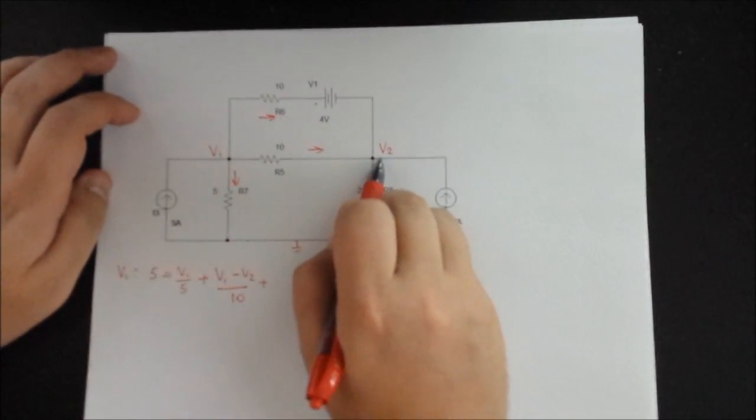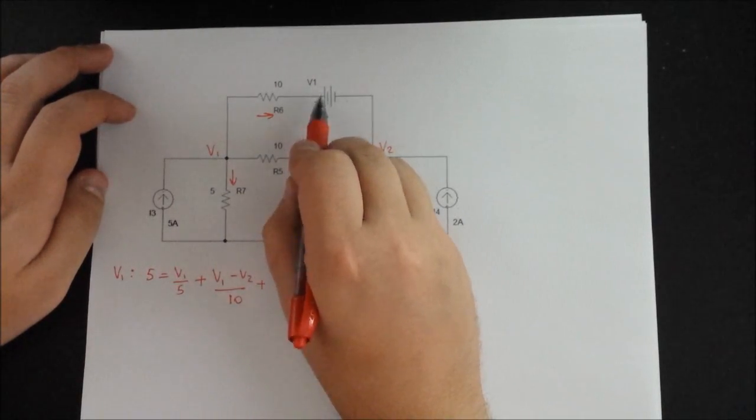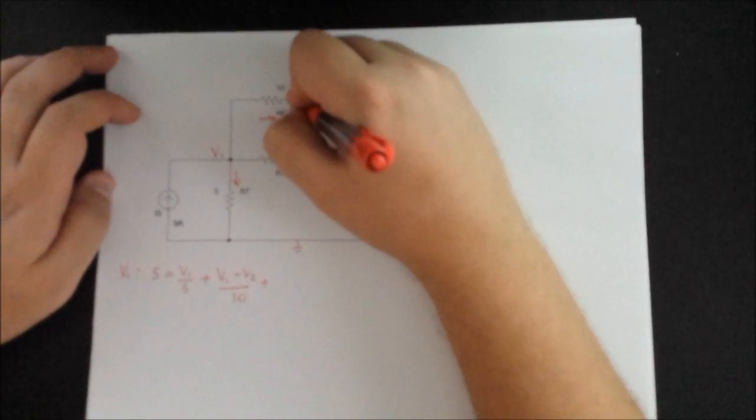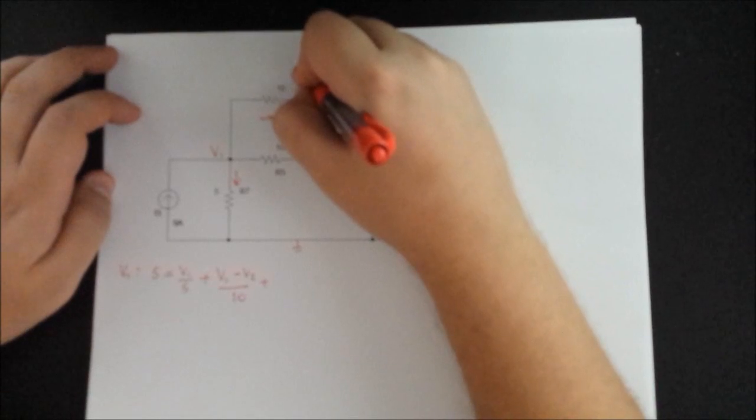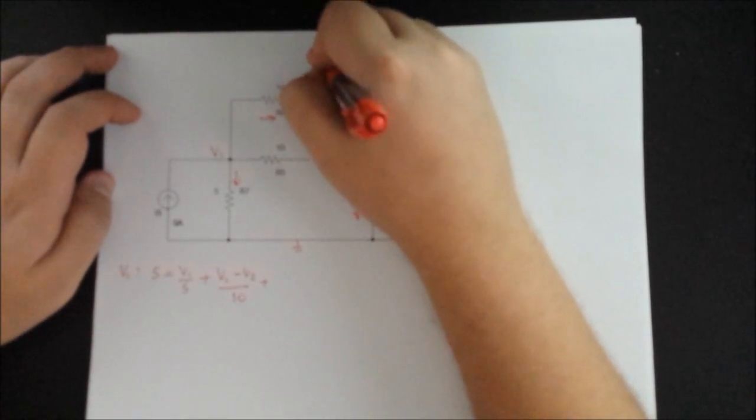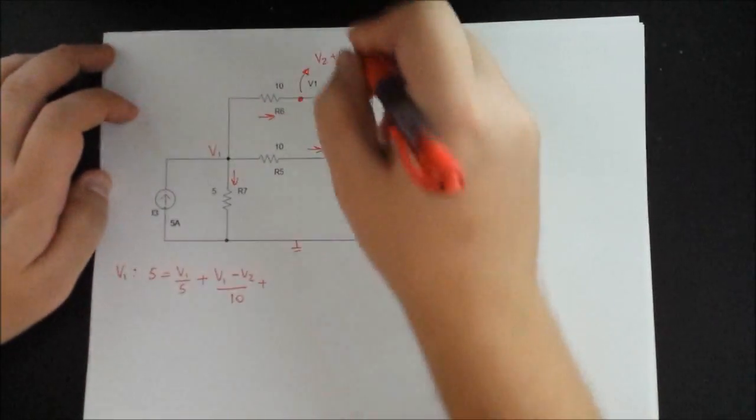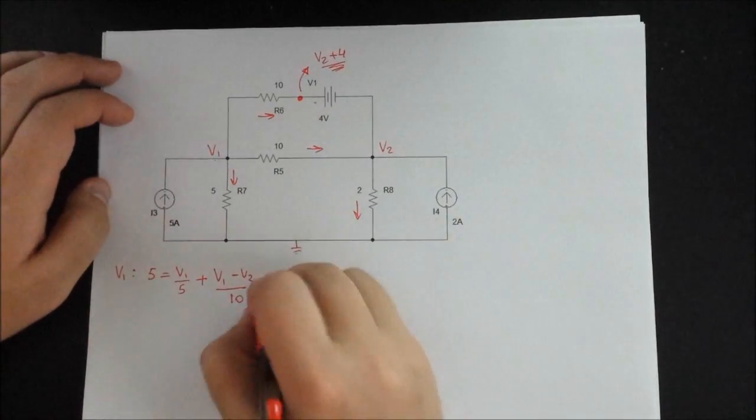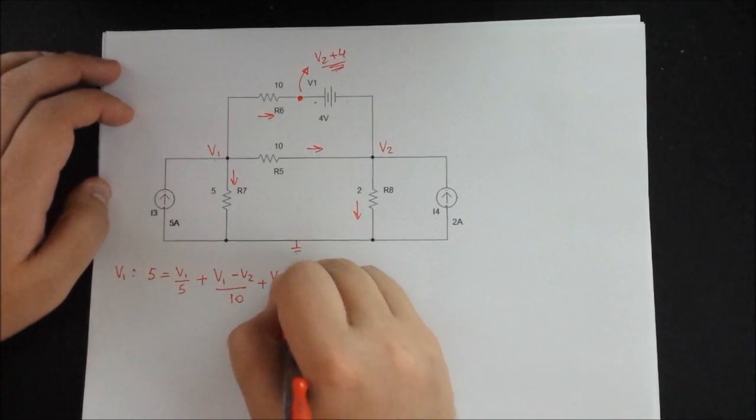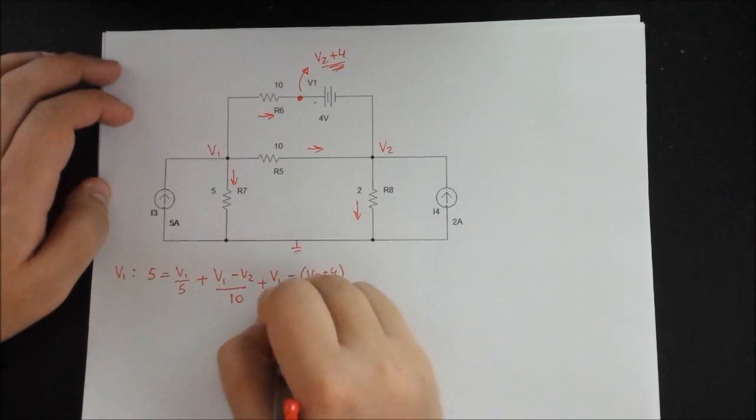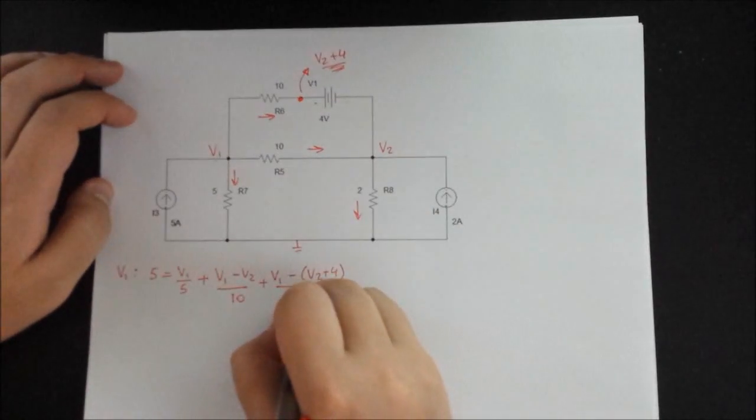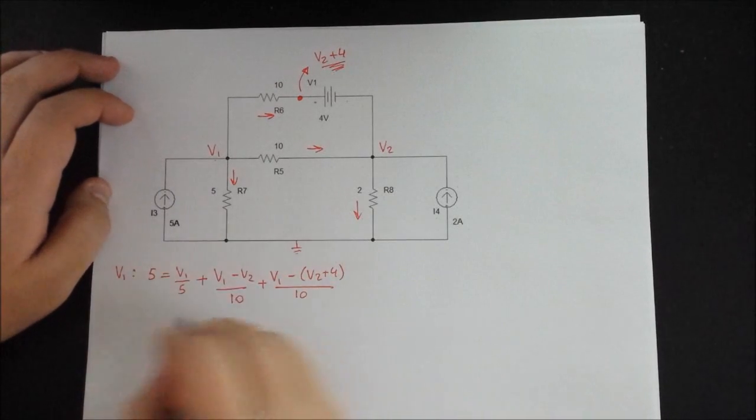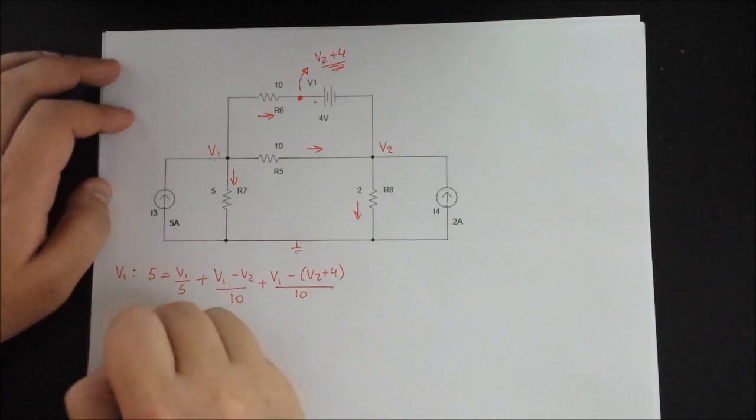what you would write is V1 minus V2. But since you have a 4V source, this node basically becomes a V2 plus 4V. So you use it the same way as you would. So V1 minus V2 plus 4. And all that is divided by your resistance, so it's 10.